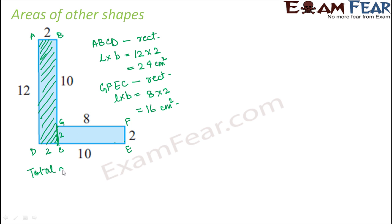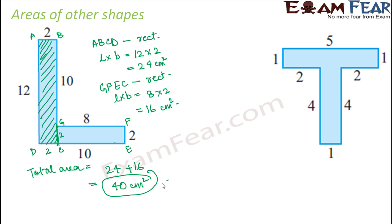Therefore, total area of this shape would be equal to area of rectangle ABCD plus area of rectangle GFEC, that is 24 plus 16, that is 40 centimeter square. So let's look at another shape. This is in the shape of T. So can you tell me how can we find out the shape in this case?